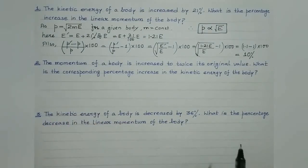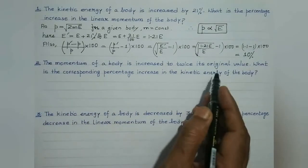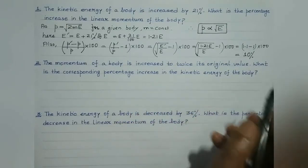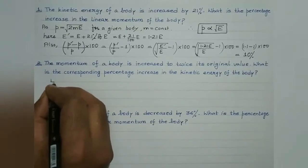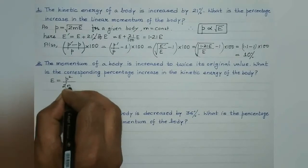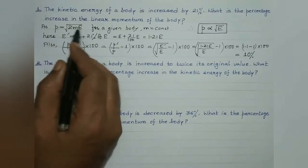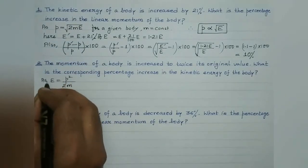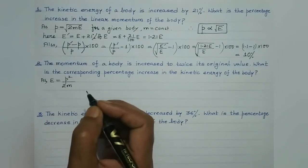Next question: the momentum of a body is increased to twice its original value. What is the corresponding percentage increase in the kinetic energy of the body? We know E equals p square divided by 2m. For a given body, mass is constant, so kinetic energy is directly proportional to the square of momentum.